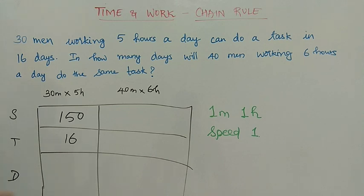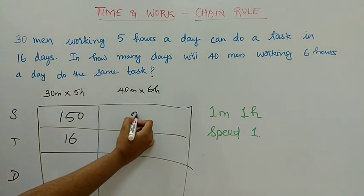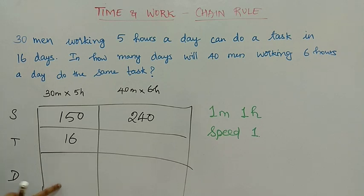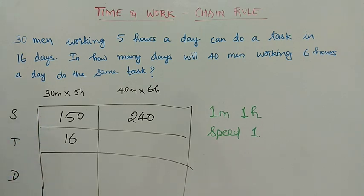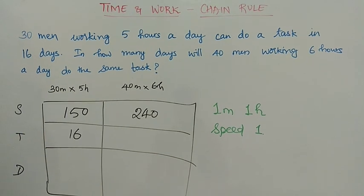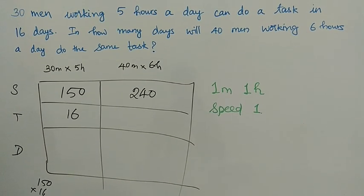That's the same — 40 men into 6 hours. One man, one hour of work — 40 men, work is 40. 40 men into 6 hours: 40 into 6 is 240 total work. So, speed is 150, time is 16 days. Distance is speed into time: 150 into 16 is 2,400. That is the total distance — the total work.